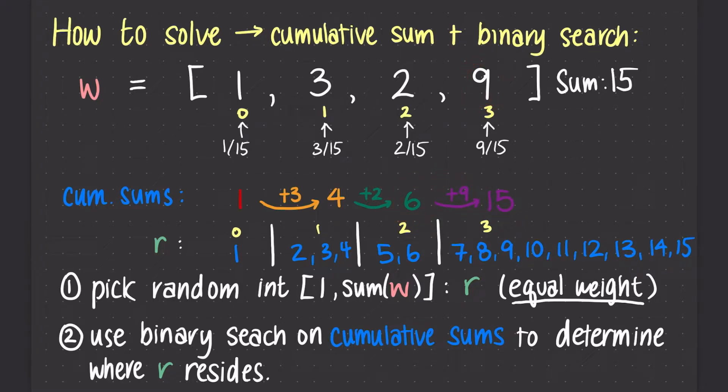So if we were to pick some random integer between 1 and the sum of w inclusive, here the sum of w is 15, let's call that random integer r. We pick r with equal weight, meaning that r has an equal probability to be 1, 2, 3, 4, 5, 6, 7, 8, 9, 10, 11, 12, 13, 14, or 15.